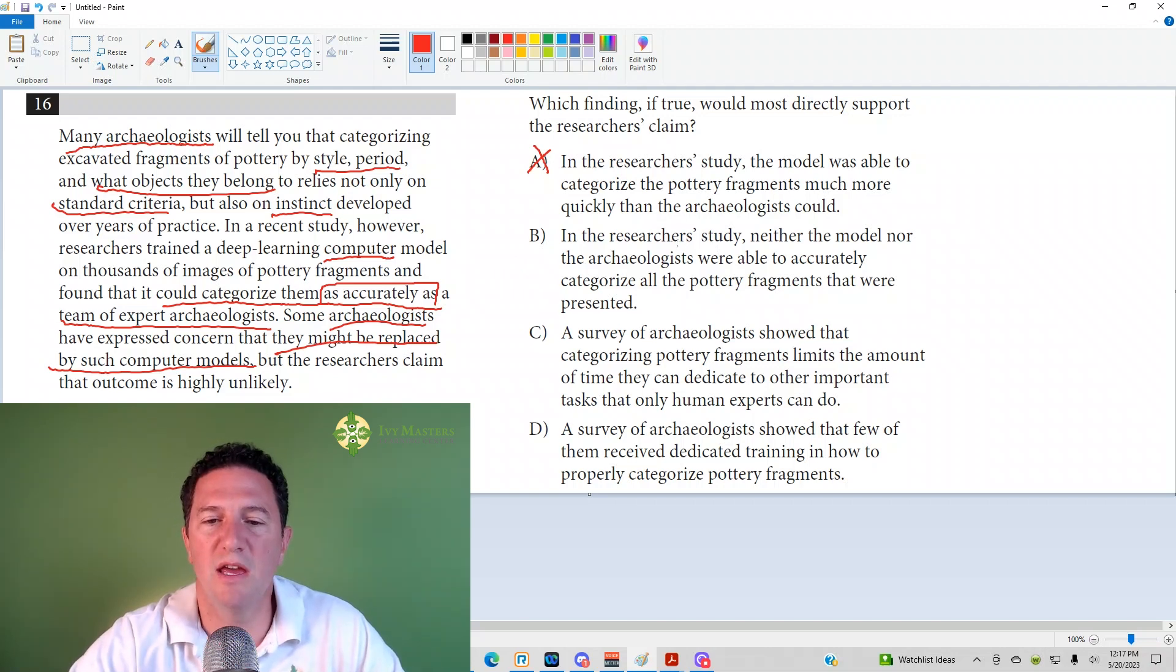Answer choice B. In the researchers' study, neither the model nor the archaeologists were able to accurately categorize all pottery fragments that were presented. That's wrong also, because when you say one thing is as accurate as another, it implies that the first thing is accurate and the next thing is also accurate.